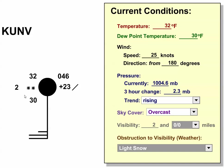The visibility is over on the far left here, and it's two miles in this case, because of light snow, as indicated by the two little snowflake icons. The sky is completely overcast, as indicated by the fact that this circle is completely filled in.